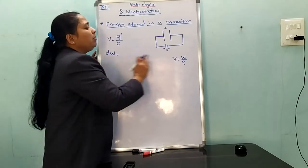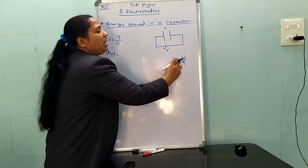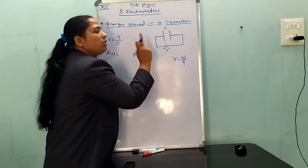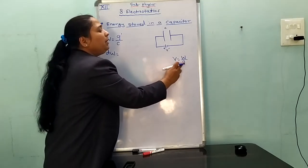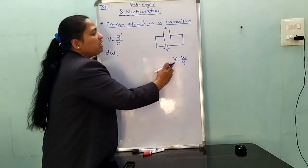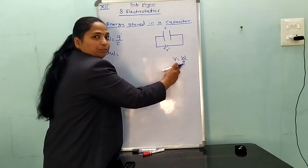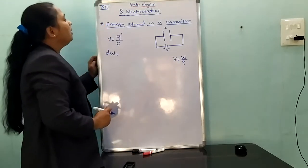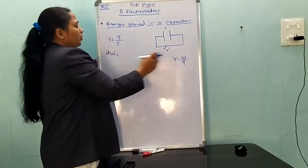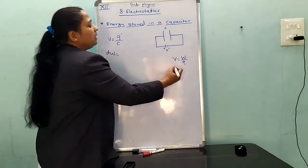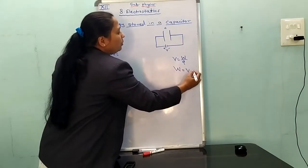The formula for electric potential is: V is equal to work done to bring a unit positive charge from infinity to a given location. That is, V is equal to W upon Q, which means W is equal to V into Q.